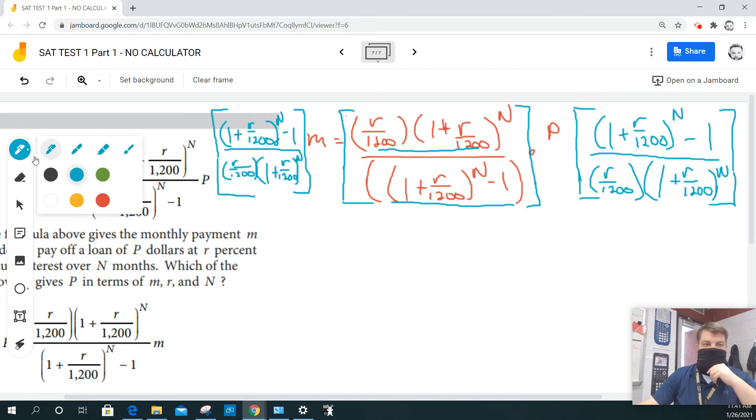Now when I do that, what's going to happen is that this cancels with this, and this cancels with this. And on this side of the equal sign I'm left with P. That's it.